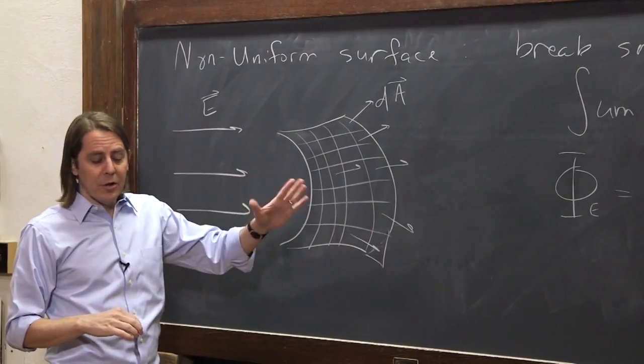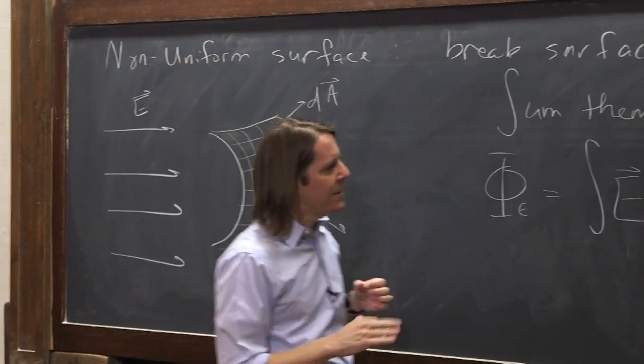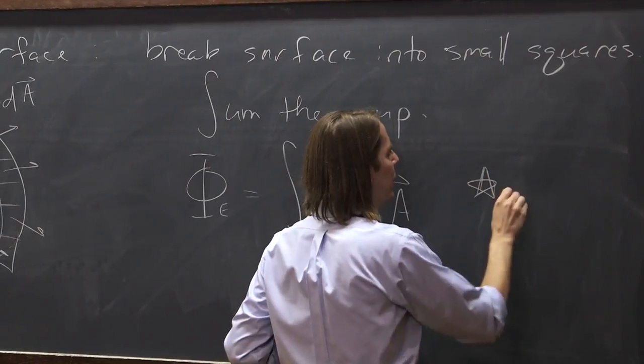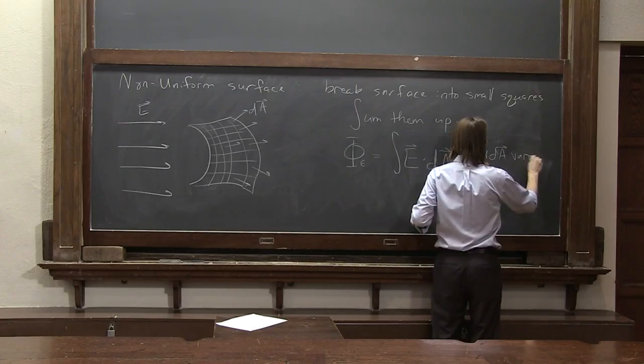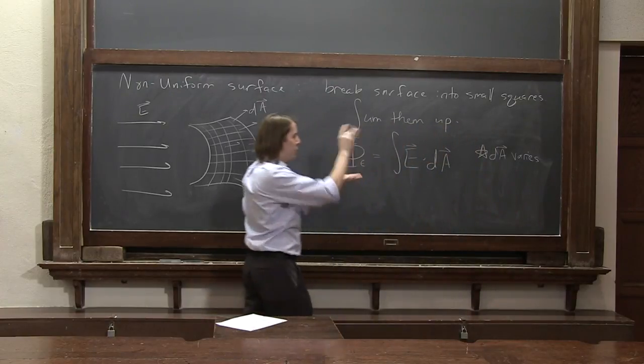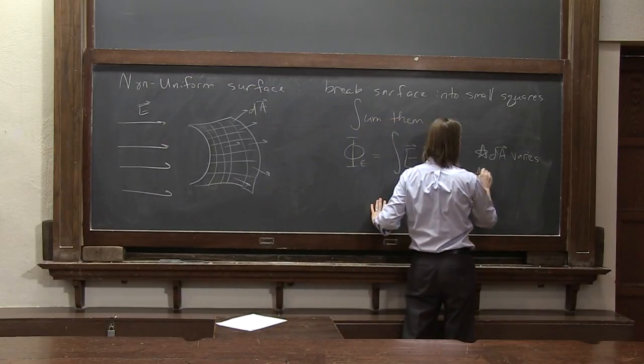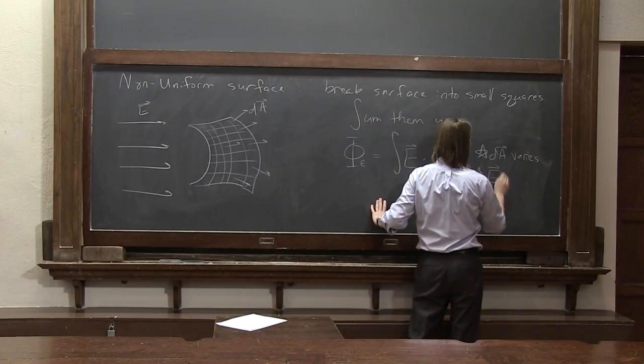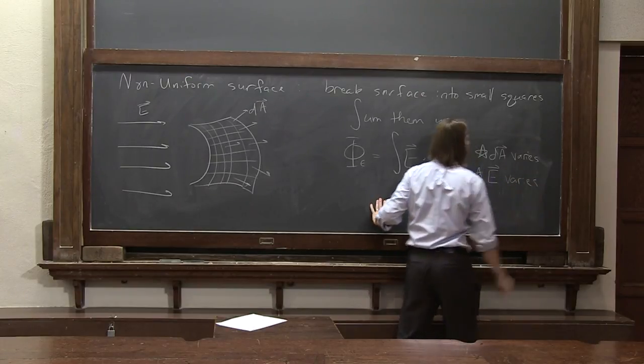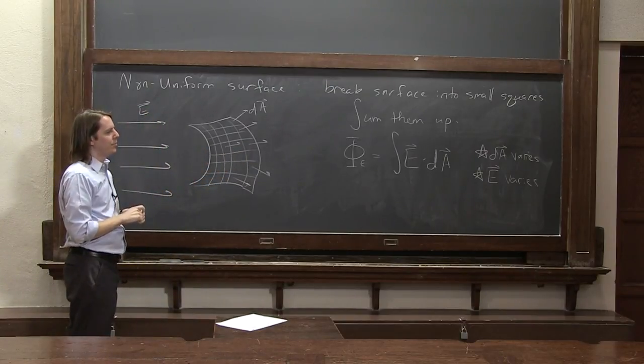So it's another case of integration that you have to think about. What can get tricky is two things. It can become complicated because DA varies in space. As you move around, the direction of DA depends on where you are. And E might vary in space. We may do cases where E is not just a uniform field. So E can vary.